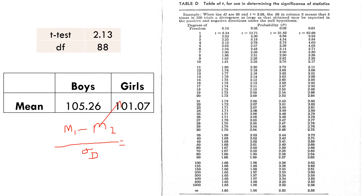After applying the formula, the t-value is 2.13. For the degrees of freedom, we take n1 minus 1 for group 1, where n1 is 46, plus n2 minus 1, where n2 is 44. So the degrees of freedom for this example is 88.